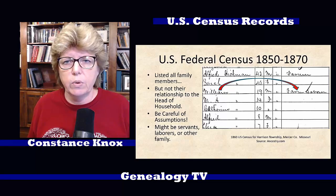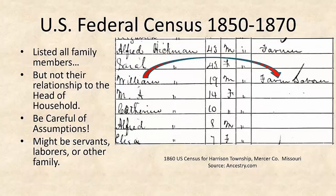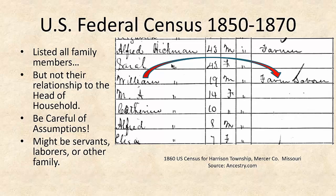Now in this example, I'll make it a little bigger so you can see it. We have Alfred Hickman, his wife Sarah — we assume. We assume they're the same age, but we don't know that. Sarah could be a sister. It could be a twin sister. I don't know.